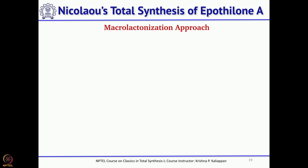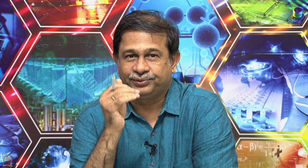In the second-generation synthesis, the major difference was that instead of ring-closing metathesis, Nicolaou wanted to use macrolactonization. As you can see in Epothilone, there is a macrolactone, so he wanted to use Yamaguchi's macrolactonization approach to form it.